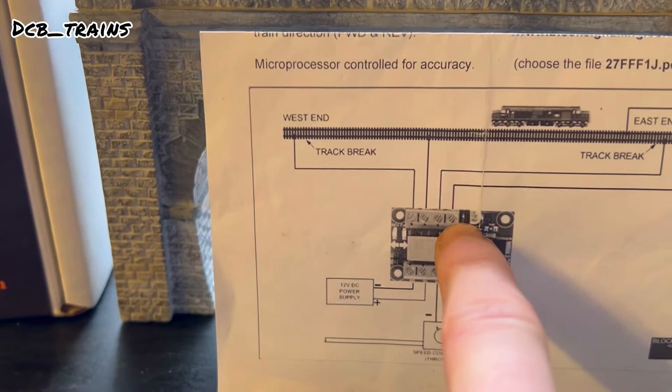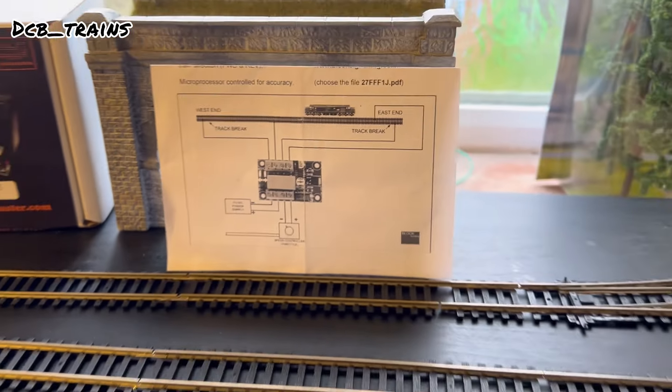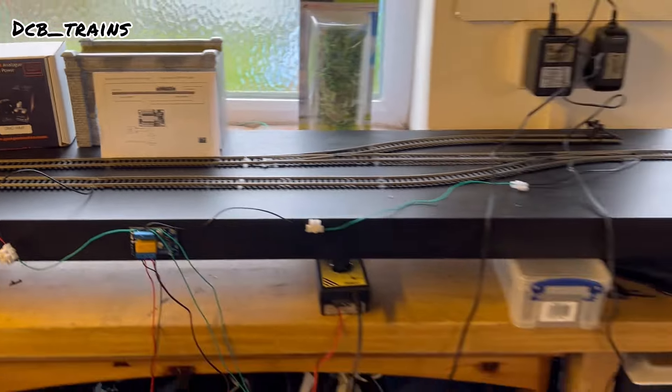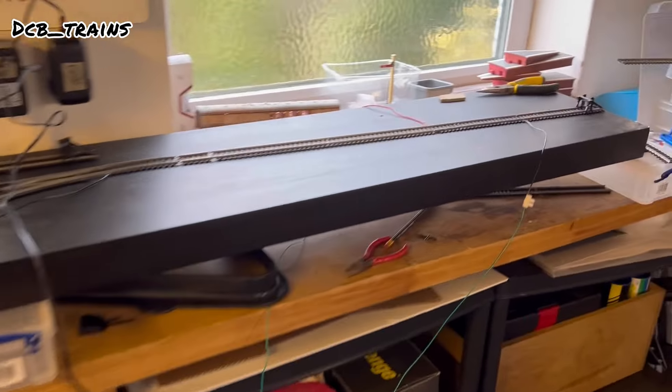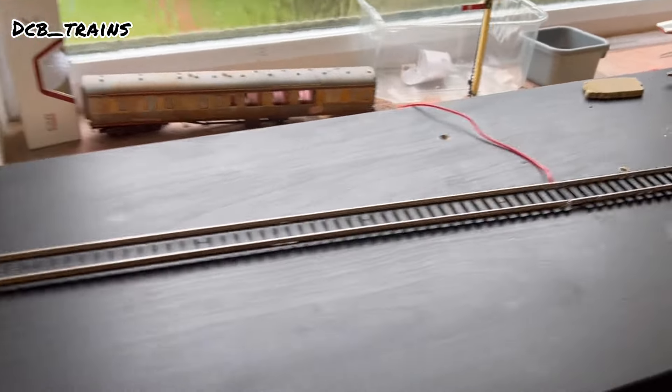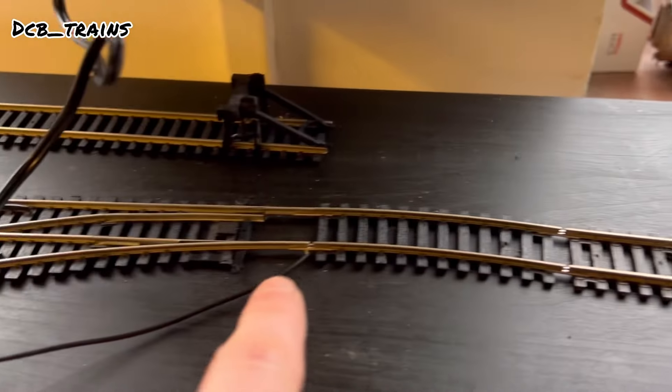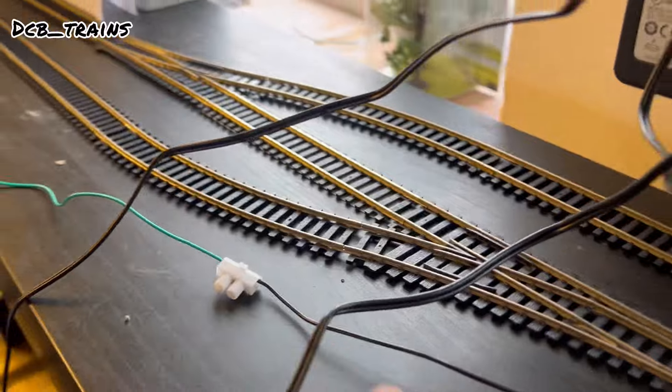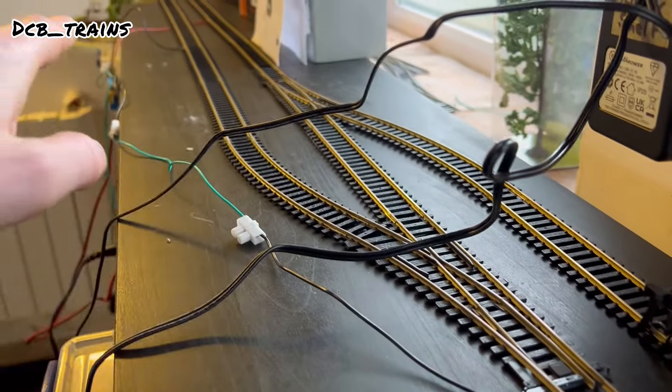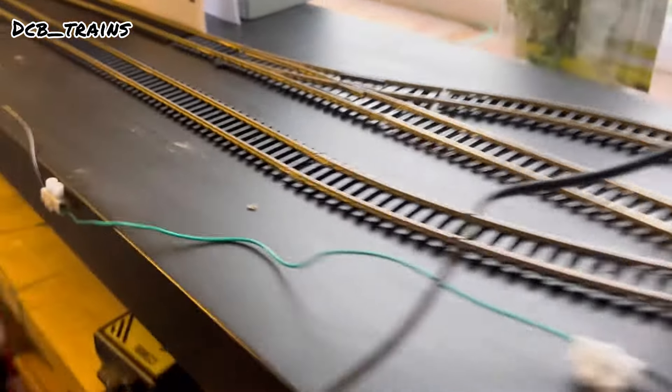And this enables basically the train to stop and then go back again. It's quite a simple diagram, does its job really nicely. All you need is a pair of wire strippers just to cut the wire. But it's quite simple really. Now I've made it slightly more complicated because obviously I've got a point involved and two sidings but it works exactly the same.